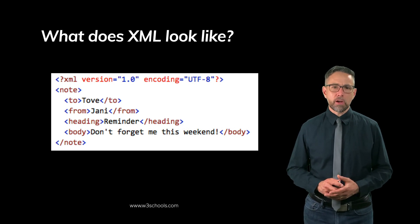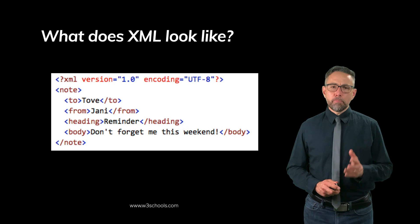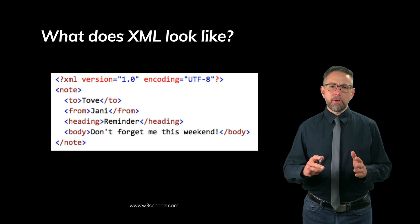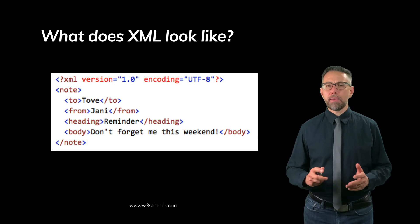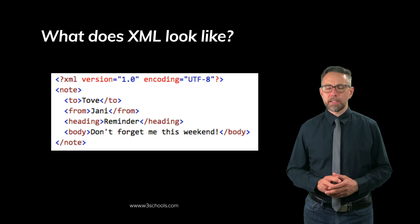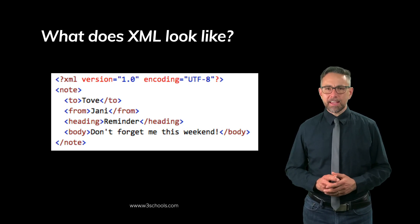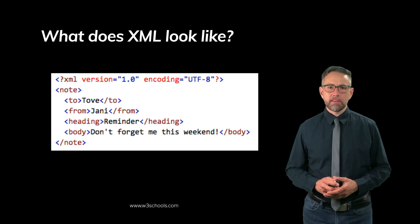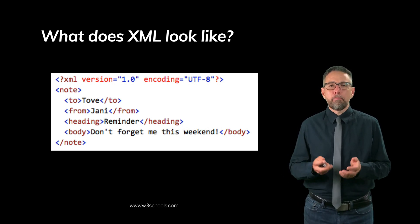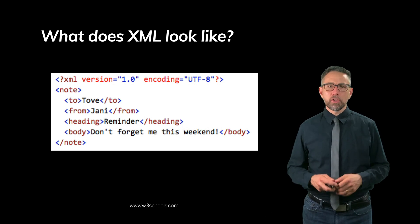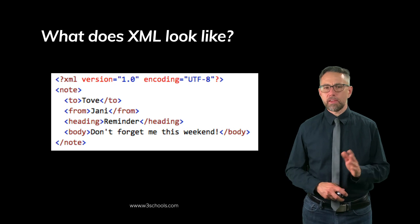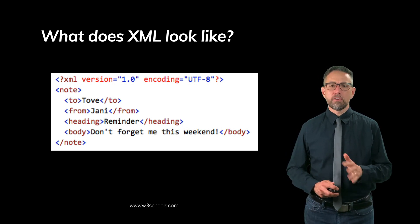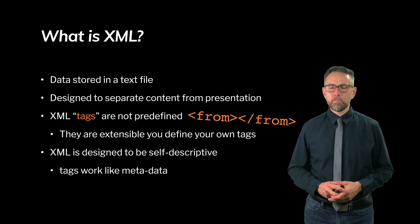The brown and blue angle brackets together are called tags, and they are also called metadata — data that describes data. So 'body' is a tag and is metadata, because it describes 'don't forget me this weekend.' That phrase would be considered data, or the body of the message. You can imagine someone seeing this message and never seeing any of the tags — just seeing 'Tove, Jani, reminder, don't forget me this weekend.'